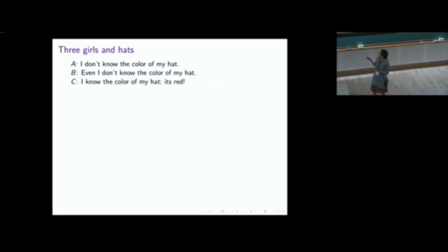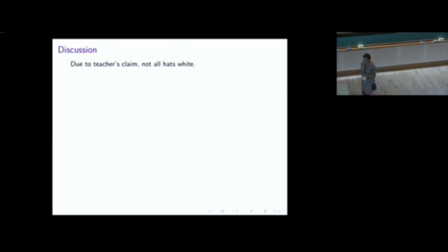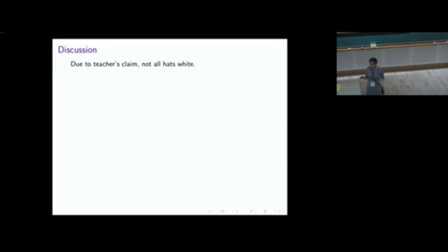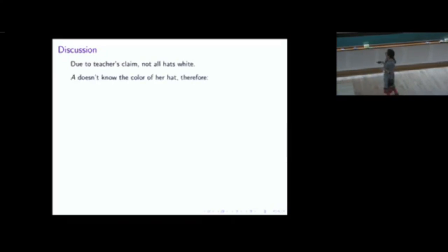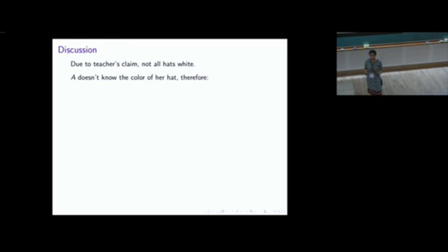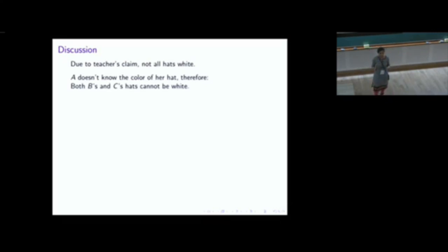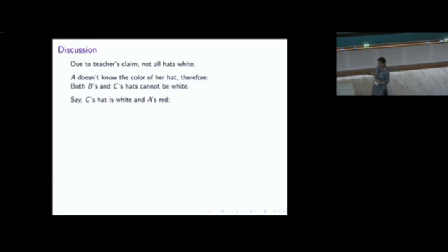The other two would have been white. Due to the teacher's claim, not all hats are white. As soon as girl A says she doesn't know the colour of her hat, it is clear that both B and C can't be wearing white hats. So what comes through because of the communication of lack of knowledge is that some knowledge gets revealed — namely, B and C are not both wearing white hats.